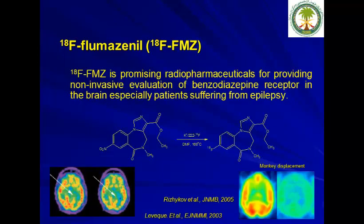F18-Flumazenil is a promising radiopharmaceutical for providing non-invasive evaluation of benzodiazepine receptors in the brain, especially in patients suffering from epilepsy. Production is also straightforward and can be performed using a chemistry box. Images using human subjects and monkey subjects are shown here.